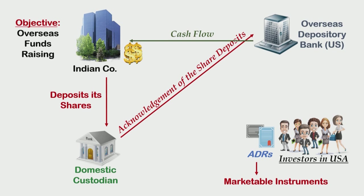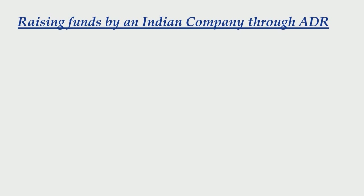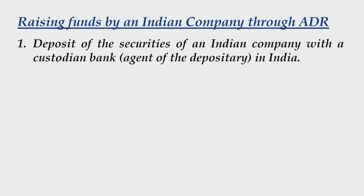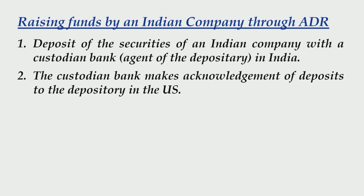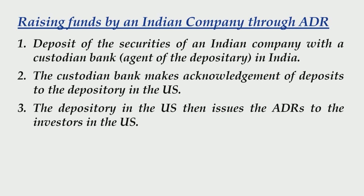Let us note down the entire procedure step by step for raising funds by an Indian company through ADR. First, the Indian company deposits its securities with a custodian bank in India, which is the agent of the depository in the US. Second, the custodian bank makes an acknowledgement of the deposits to the depository in the US. Third, the depository in the US issues ADRs to the investors in the US. Lastly, the US dollar receipts in the hands of the depository are passed on to the Indian company.